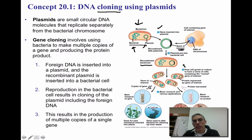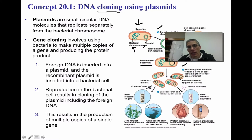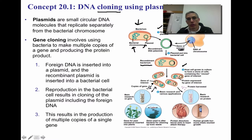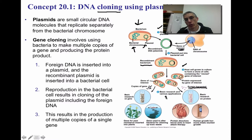This would be considered a recombinant bacterium because it actually has the plasmid with our gene of interest. In step three, we need to be able to grow multiple copies of that bacterium with the recombinant plasmid. These are going to be our multiple copies, and hopefully they're going to produce the protein that we're interested in. Then we can do further research and decide how we're going to use that particular protein.